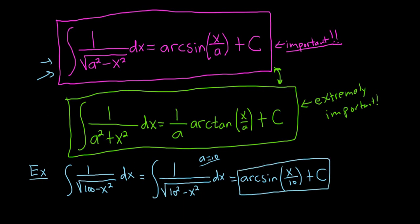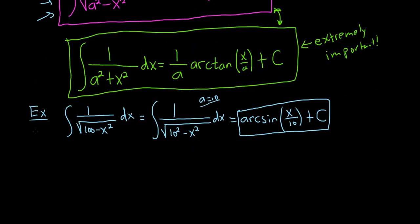Now, this is probably the easiest possible example. The problems do get harder. You usually have to make some type of u substitution, or sometimes you have to complete the square. Or sometimes it does get way, way more intense. Let's do one more simple example.